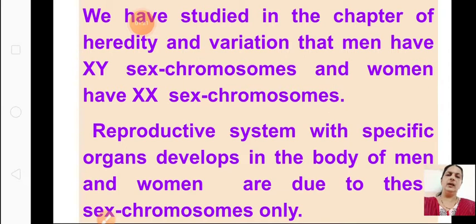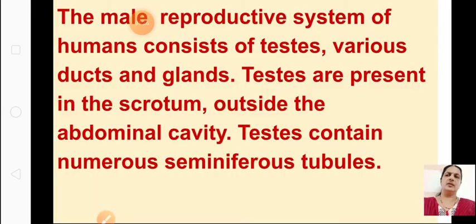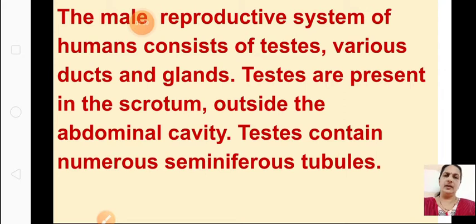Now let us start with the male reproductive system. The male reproductive system of humans consists of testes, various ducts and glands. Testes are present in the scrotum, outside the abdominal cavity in males.